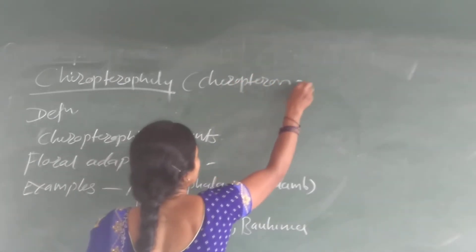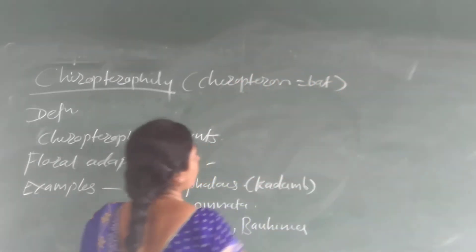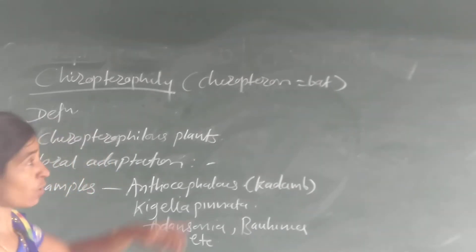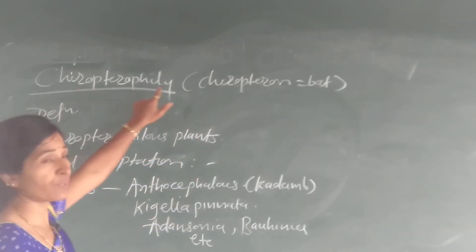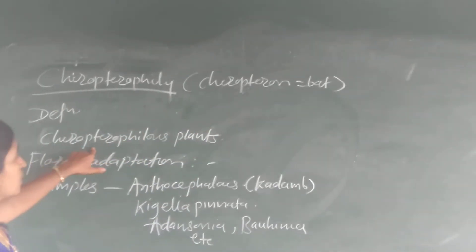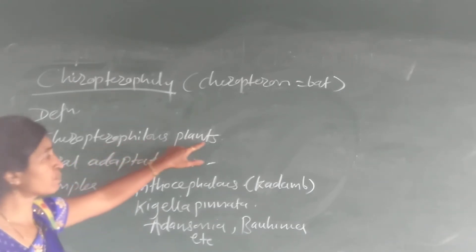Chiropteron means bat. The pollination takes place through the agency of bat, then it is called Chiropterophy and these plants are called Chiropterophilous plants.